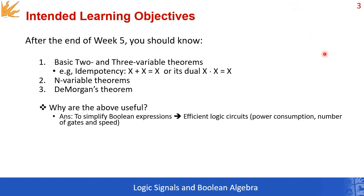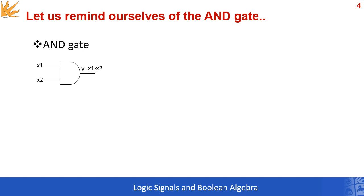Without further ado, let's remind ourselves of the AND gate. The AND gate is symbolized like this with two inputs and one output. y, the output, is the logical multiplication between x1 and x2. This is the truth table, according to which an AND gate has one as a result only if both inputs equal one.